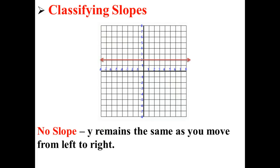Here, we have a line that has no slope. That means that y remains the same as you move from left to right. It's basically just a horizontal line.